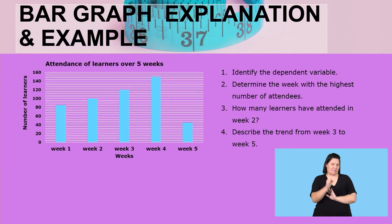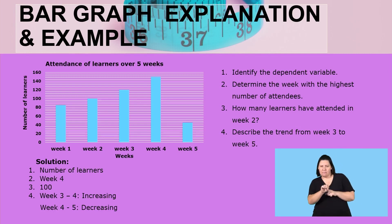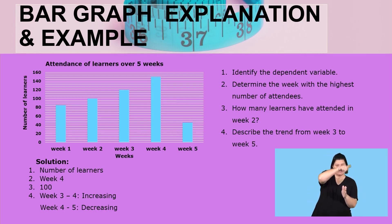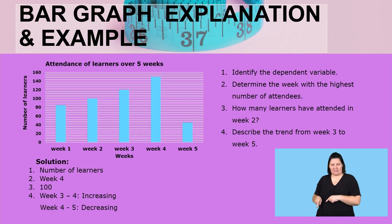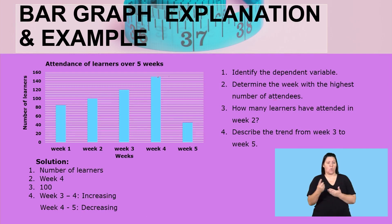Let us take this first example: identify the dependent variable. The dependent variable is the variable which is depending on another one — the one you can measure and read data from. The number of learners is the dependent variable because the weeks are not depending on the number of learners. Next: determine the week with the highest number of attendees. Remember, the highest point is shown by the bar which is bigger — so week four is the one.